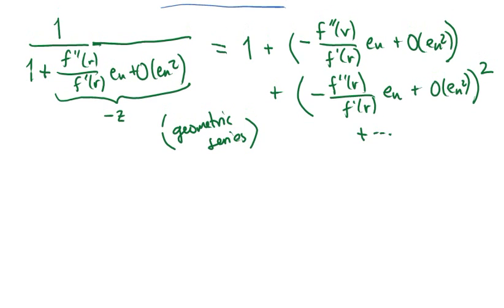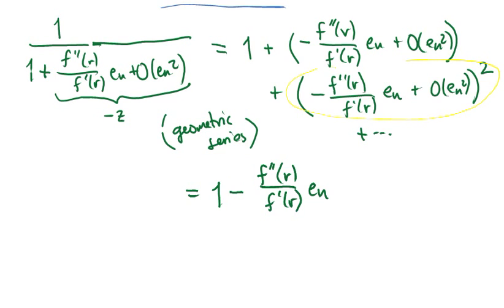Fortunately I'm going to be able to ignore most of this. The first term here is e_n; the next term is on the order of e_n squared. If I look at the next big term in parentheses, there's an e_n and e_n squared, and that whole thing is squared. So the first term of this second bit is by itself on the order of e_n squared.